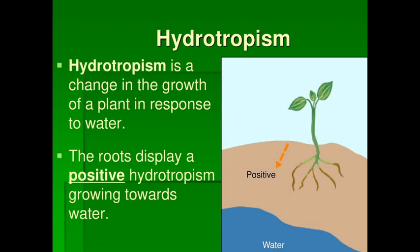Hydrotropism is the change in the growth of a plant in response to water. When we supply water to the plant, the roots will display positive hydrotropism, growing towards the water.